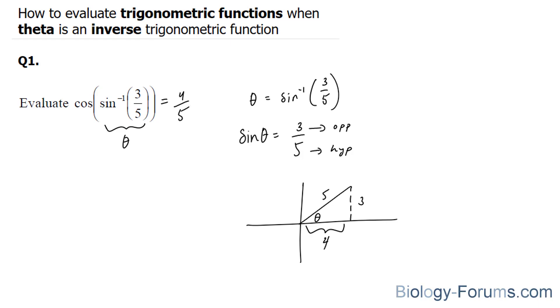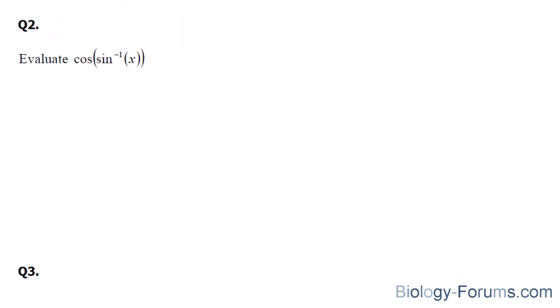Let's move on to question 2. Evaluate cosine when the inverse sine of x. Now this is a little more difficult than the previous one because this time we are using a variable. Once again, we're going to set this as theta.